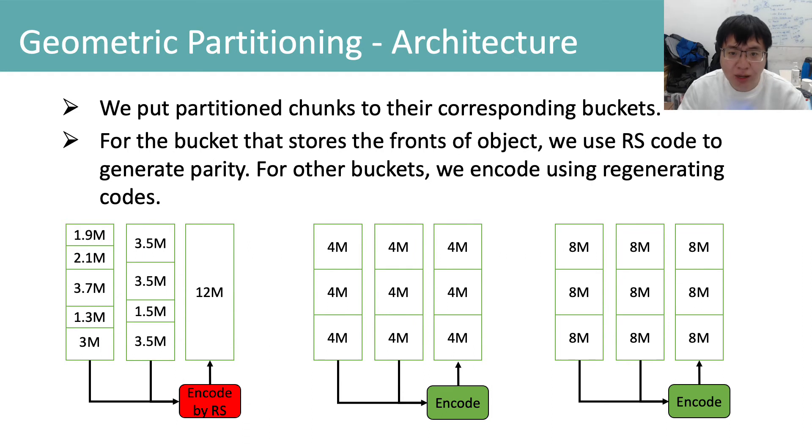For the buckets that store the front of objects, we use RS code to generate the parity. For other buckets, we encode them using regenerating codes.